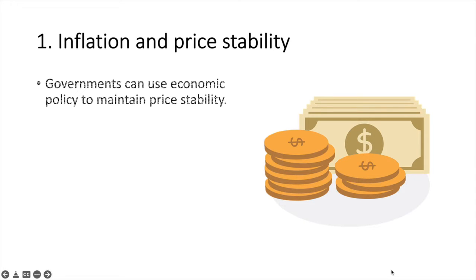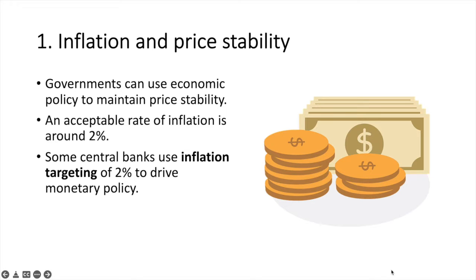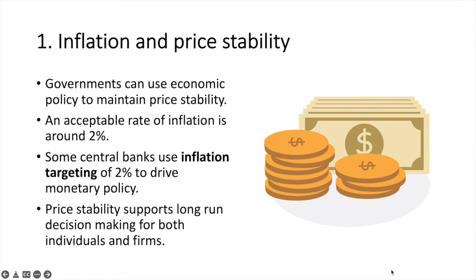Governments can use economic policy to maintain price stability. An acceptable rate of inflation is around 2%. Some central banks use inflation targeting of 2% to drive monetary policy. The Bank of England and the US Central Bank, the Federal Reserve, both target 2% inflation.